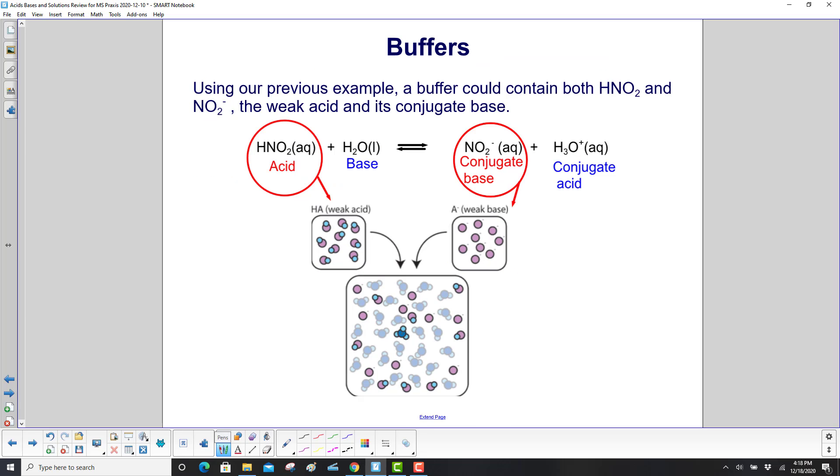Using our previous example, a buffer could contain both nitric acid and its conjugate base, nitrite - the weak acid and its conjugate base.